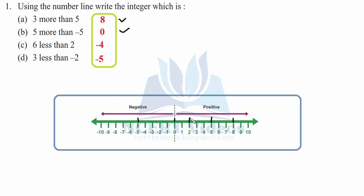Six less than two — we mark two and go six towards the negative side. Part d: three less than minus two. This is your minus two, and we will go three less to it, that is towards the left-hand side: one, two, three. So again we are at minus five, so this is your answer.